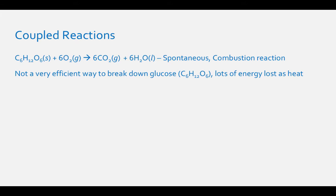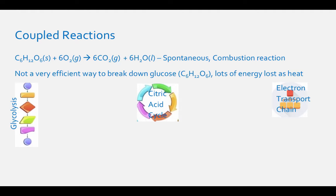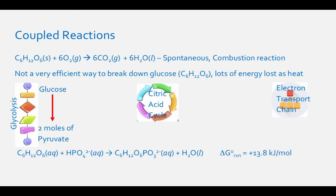So our body breaks down glucose in a series of steps called glycolysis, the citric acid cycle, and an electron transport chain. In glycolysis, each mole of glucose is broken down into two moles of pyruvate. An early step in this process is addition of phosphate to glucose to produce glucose 6-phosphate. This reaction is not spontaneous because it has a delta-G-0 reaction of positive 13.8 kilojoules per mole.